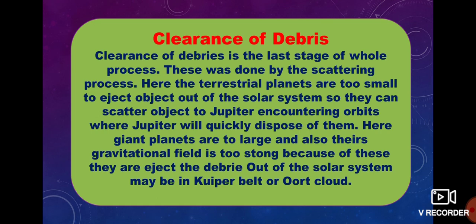The last stage is clearance of debris, which is the final stage of the whole process. This is done by the scattering process. Terrestrial planets are too small to eject objects out of the solar system, so they scatter objects into Jupiter-encountering orbits, where Jupiter will quickly dispose of them. Giant planets have very strong gravitational fields and eject debris out of the solar system, possibly into the Kuiper Belt or Oort Cloud.